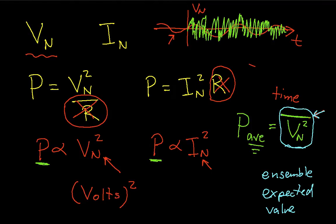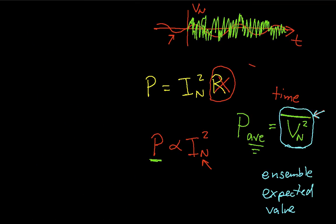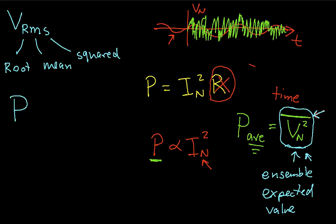And what we will do is, oftentimes we will use this as follows. We will define an RMS voltage, where the R is root, the M is mean, and the S is squared. And you can see that if I have this guy here, which is my mean squared voltage, if I take the square root of that, then I could say that the average power, and I'm going to drop the average bit on the power now, is equal to the RMS voltage squared.